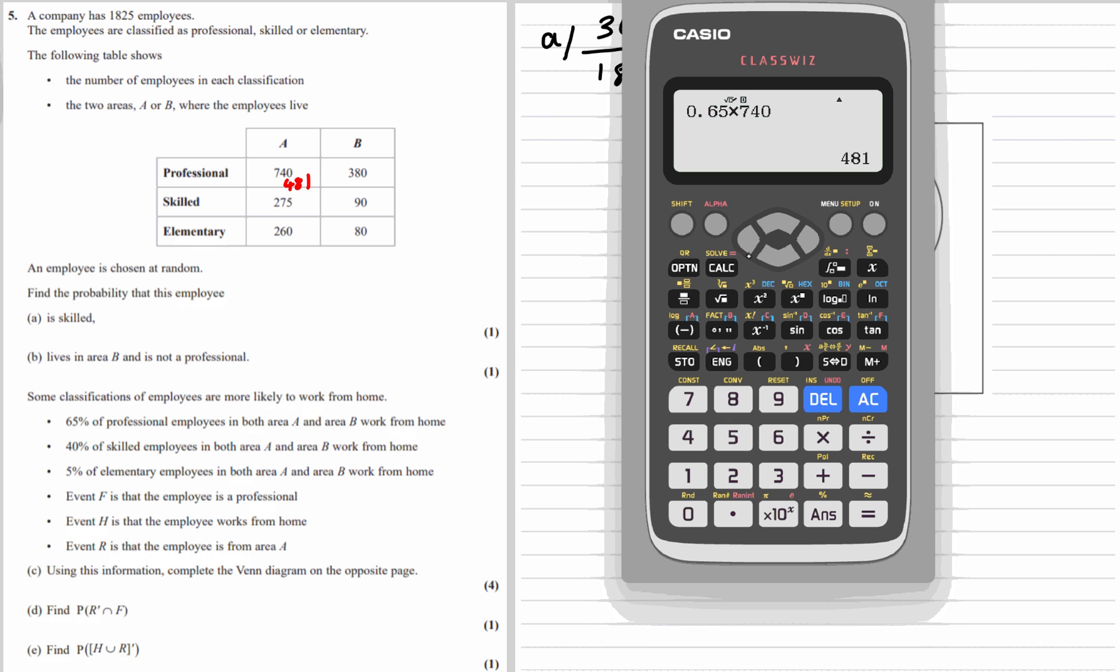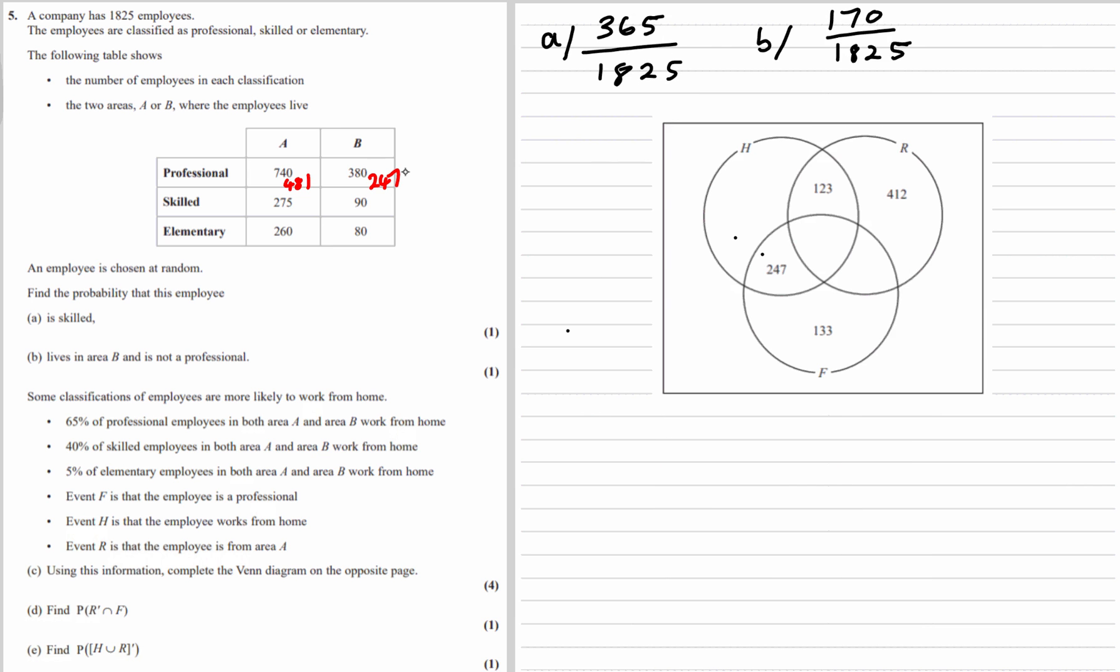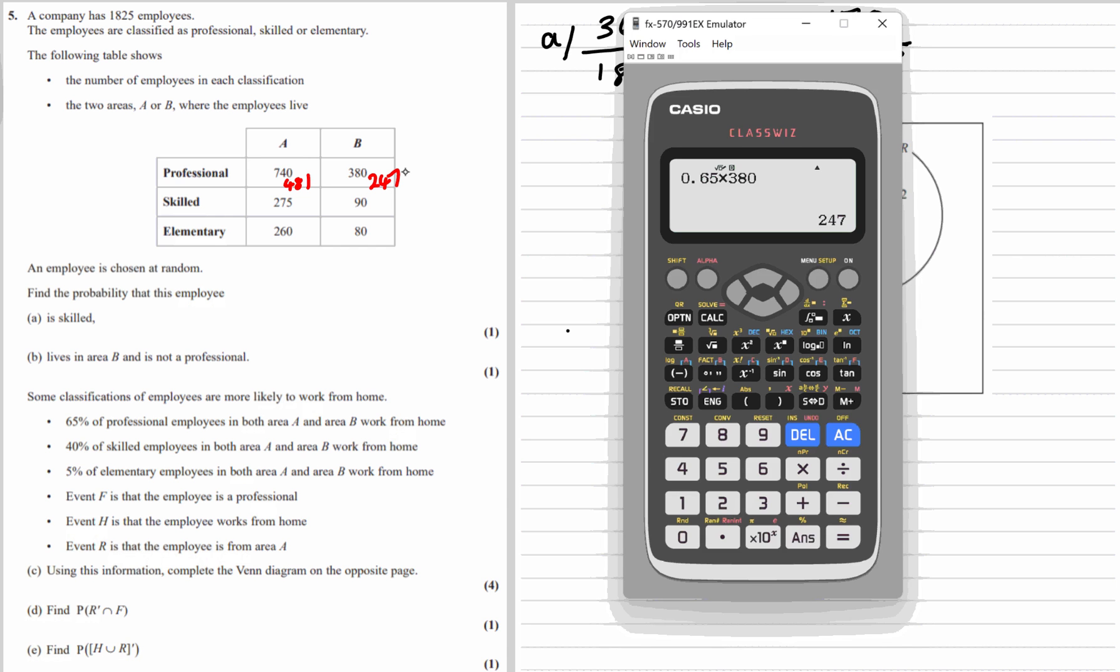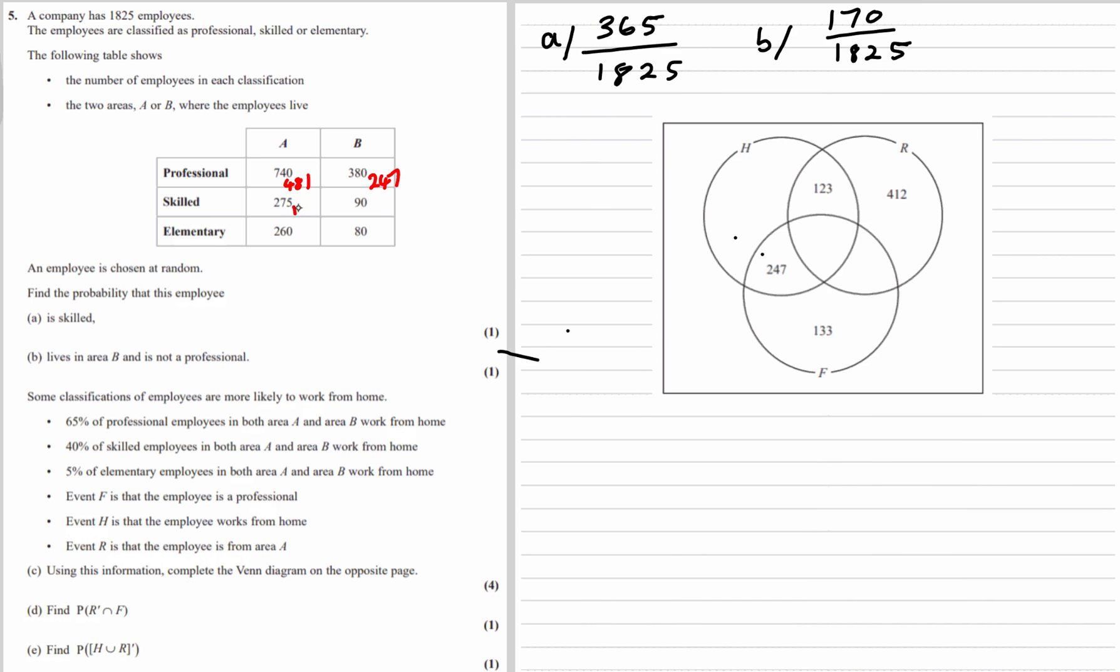And 65% of 380, which is 247. So 247 professionals in B work from home. 40% of skilled employees work from home. So 40% of 275 is 110, and 40% of 90 will be 36.